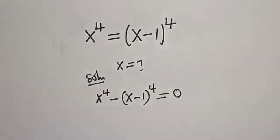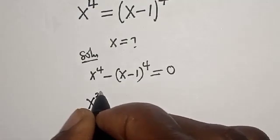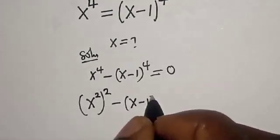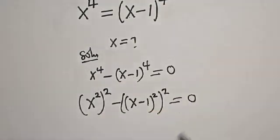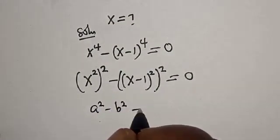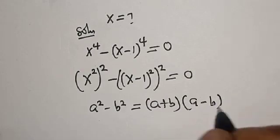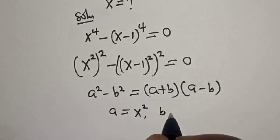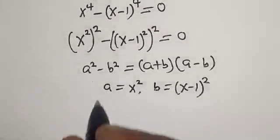This is equal to 0. Then this can be written as s-squared squared minus (x minus 1)-squared squared is equal to 0. Now if you check this very well, this is difference of two squares — that is a-squared minus b-squared is equal to (a plus b) multiplied by (a minus b).